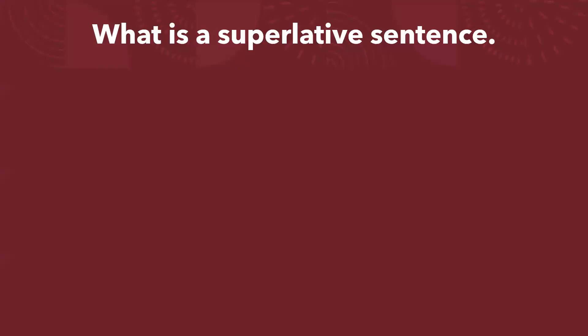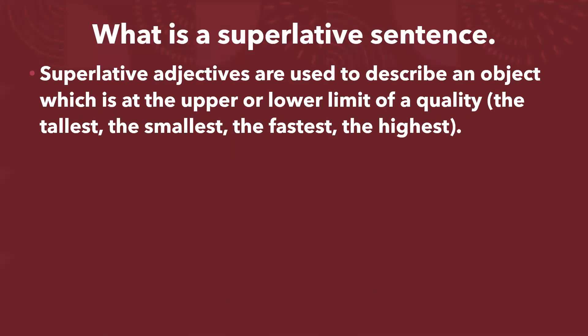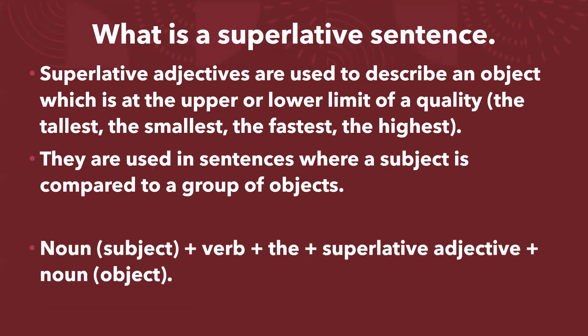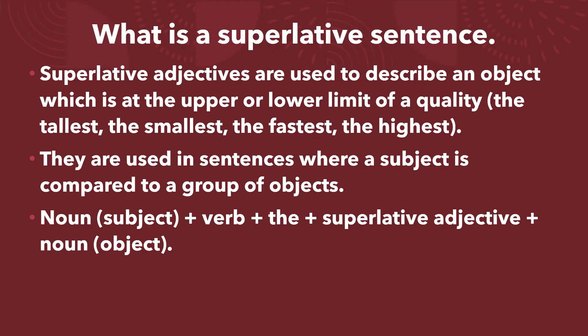What is a superlative sentence? Superlative adjectives are used to describe an object which is at the upper or lower limit of a quality — the tallest, the smallest, the fastest, the highest. They are used in sentences where a subject is compared to a group of objects. The structure is: noun as subject, verb, the, superlative adjective, and the noun as object.